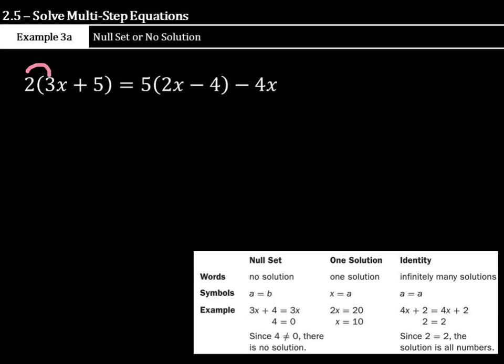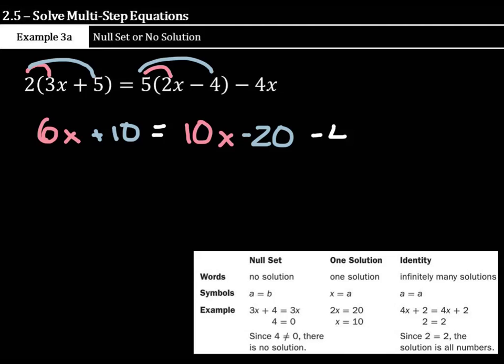If we distribute our 2 times 3x, that is 6x, our 2 times 5 is plus 10. And that's going to equal our 5 times 2x is 10x, our 5 times negative 4 is a negative 20, and then we still have this minus 4x kind of hanging out. Now, what we need to do before we move anything from one side to the other is to combine the 10x with the negative 4x so we can get this thing simplified. So we have 6x plus 10 equals, again, 10x minus 4x is, again, 6x minus 20.